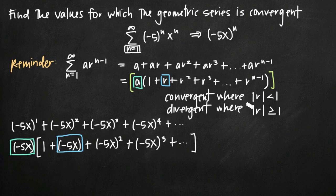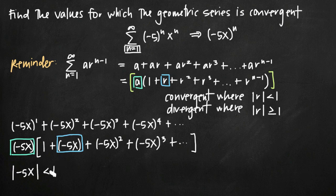By the geometric series test, the series is convergent where the absolute value of r is less than 1, and divergent where the absolute value of r is greater than or equal to 1. Since our value of r is negative 5x, the series is convergent wherever the absolute value of negative 5x is less than 1. Now it's just a matter of solving this inequality.